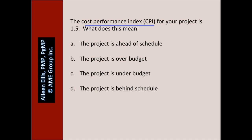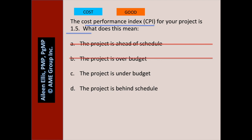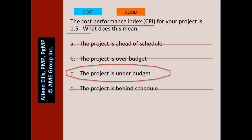The cost performance index on your project is 1.5. What does this mean? Pause the video and answer the question. Is the question about cost or schedule? It's about cost. 1.5 — is that good or bad? That's good. A: the project is ahead of schedule — we have no idea because CPI is about cost. B: the project is over budget — this is false. C: the project is under budget — that's the true answer because our index is greater than 1. D: the project is behind schedule — we have no idea; we would need the schedule performance index.